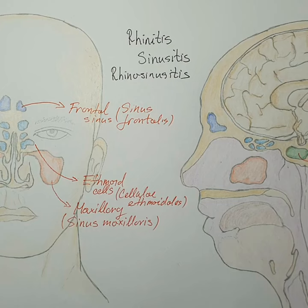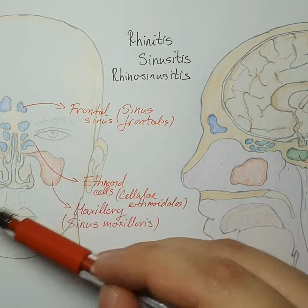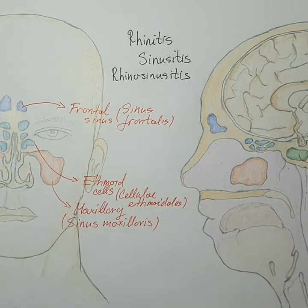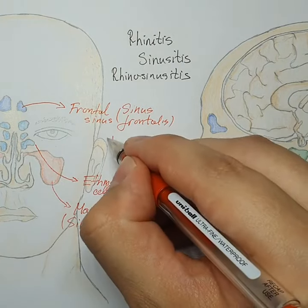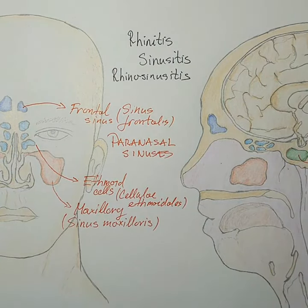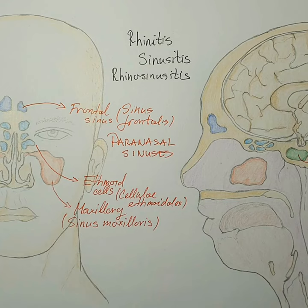These are the paranasal sinuses, located on the lateral sides of the nasal cavity — 'para' meaning lateral — which is why they are called paranasal sinuses. Their mucosa is what becomes involved in sinus infections. Now that we've reviewed the anatomy, let's look at the functions of these sinuses.